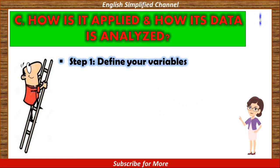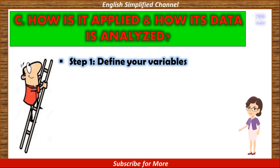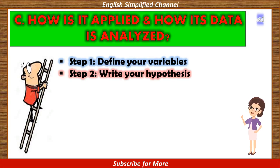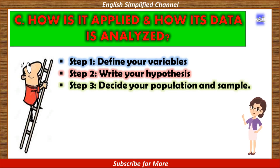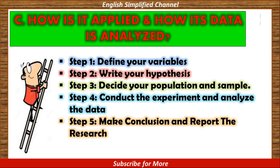To answer how true experimental is applied and how its data is analysed, there are five steps to follow. Step 1: Define your variables. Step 2: Write your hypothesis. Step 3: Decide your population and sample. Step 4: Conduct the experiment and analyse the data. And Step 5: Make conclusion and report the research. Let's see one by one.